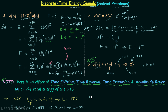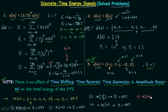If you perform the time expansion operation and have a new signal X[n/2], the total energy again remains the same. Performing amplitude reversal also gives the same total energy. However, if you perform time compression, the total energy will change. In this case, X[3n] gives a total energy equal to 17 joules.